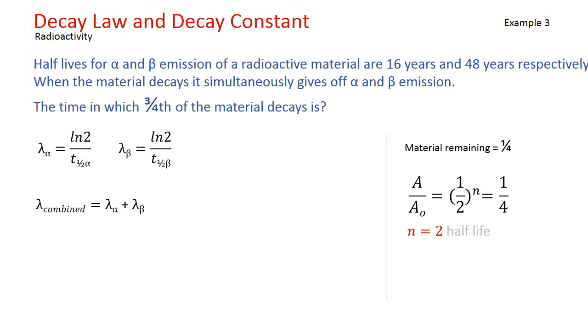So, for example, if lambda for alpha is 50% of decay per second and for beta it is 25%, we can say that after one second, 75% of the material would have decayed.